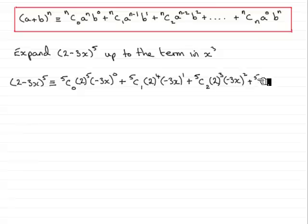And that would be 5c3. Then, it would be 2 to the power of 2. Reduce that power down by 1. And then, increase the other power. So, that's minus 3x to the power of 3.